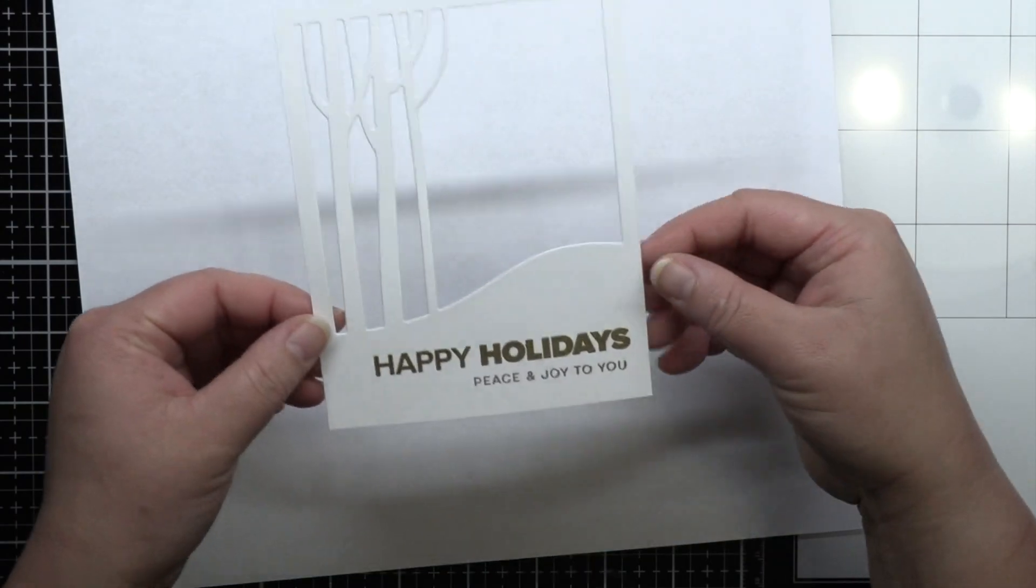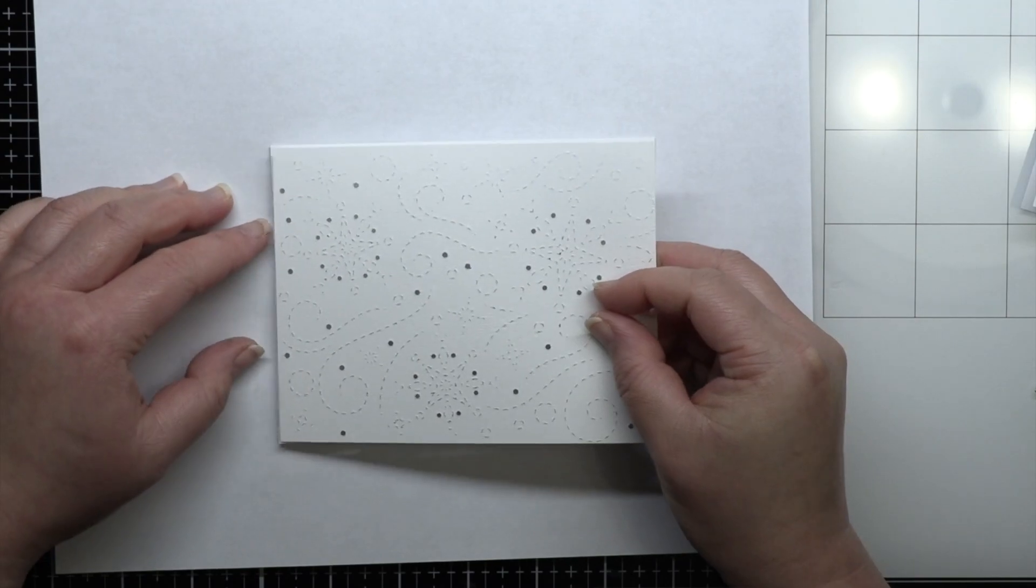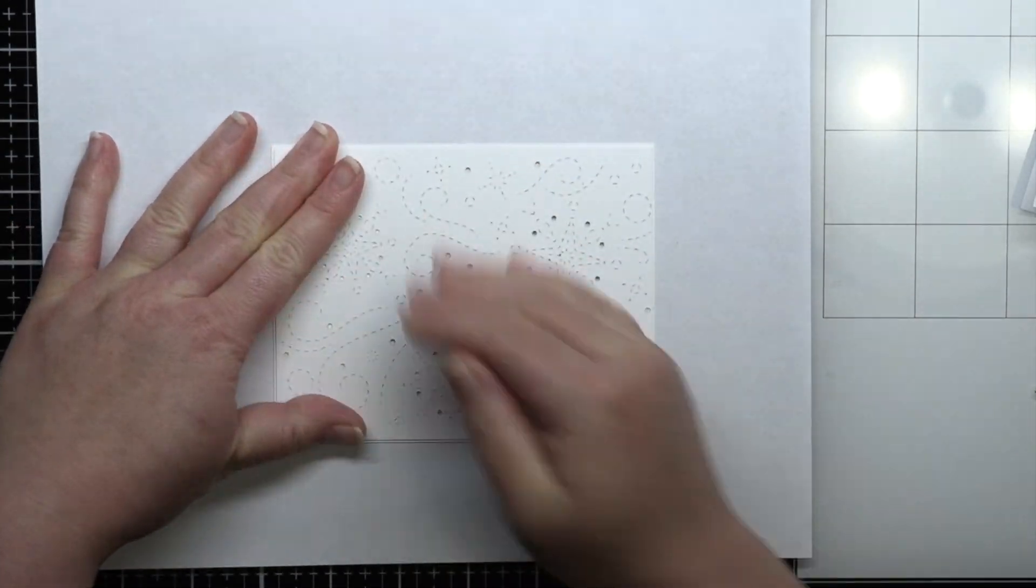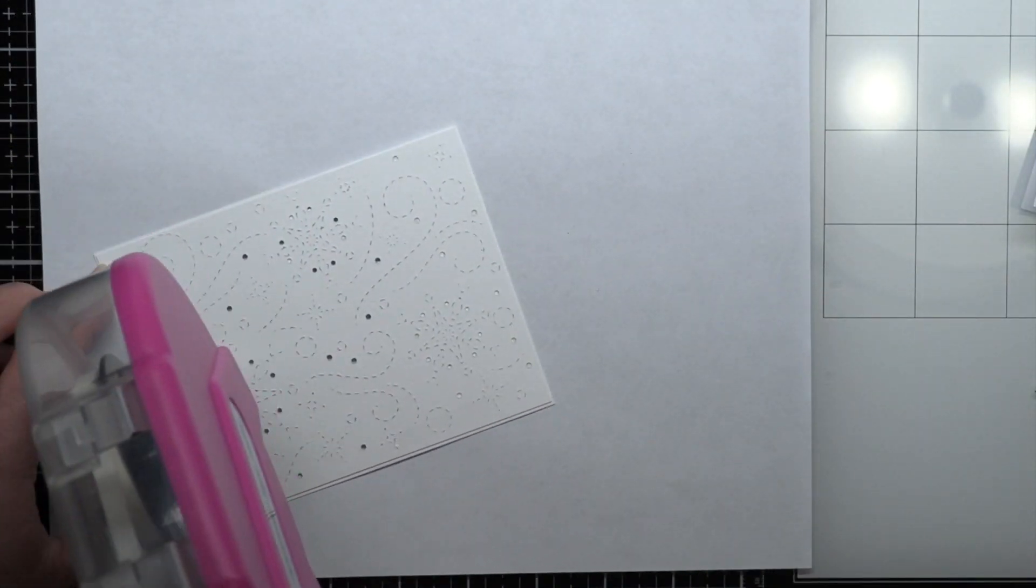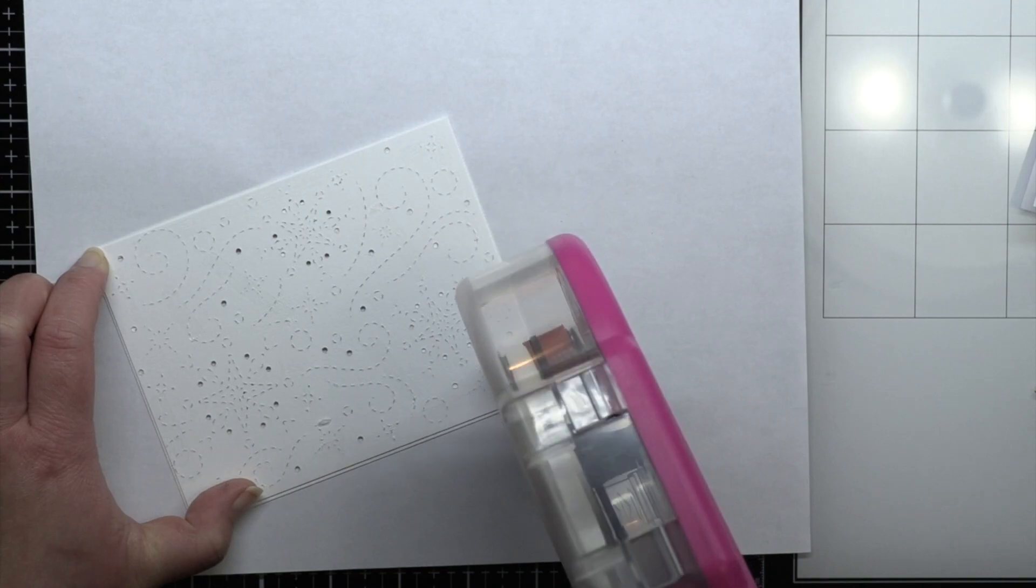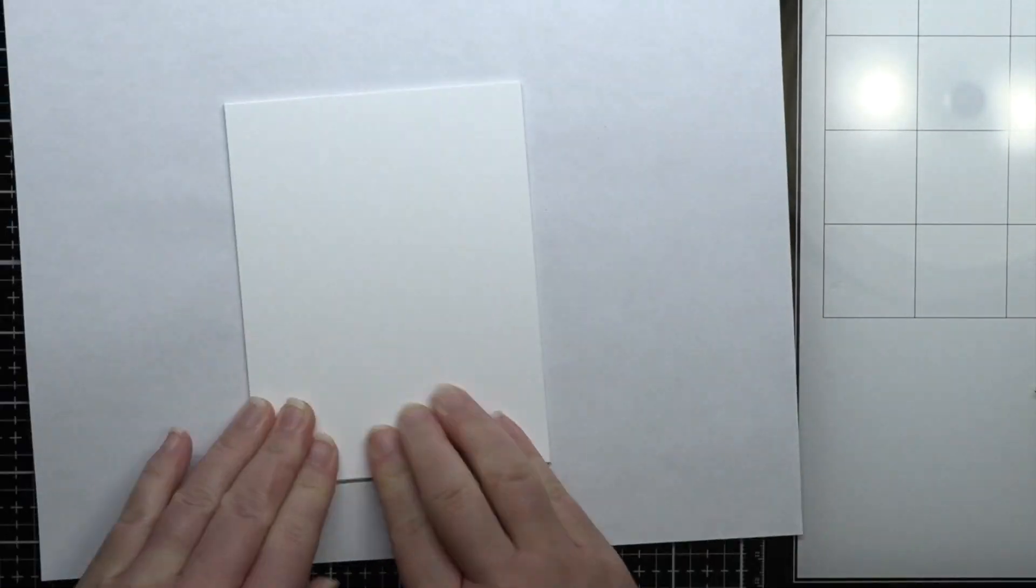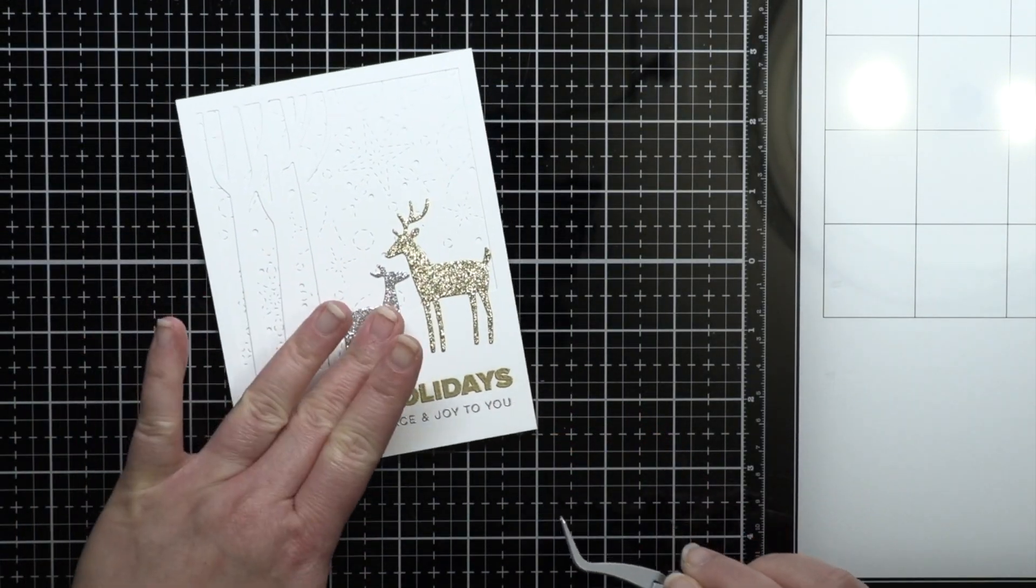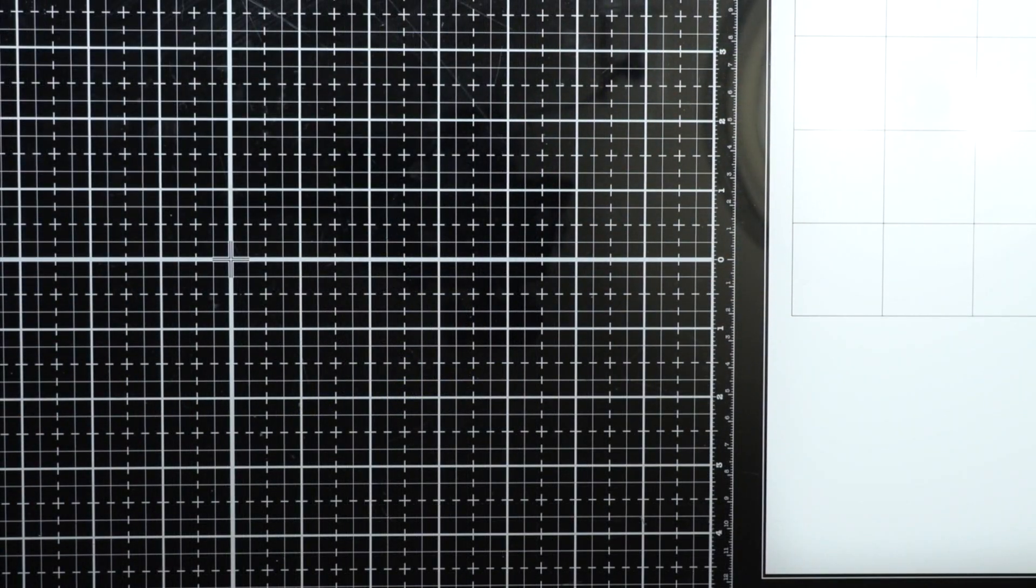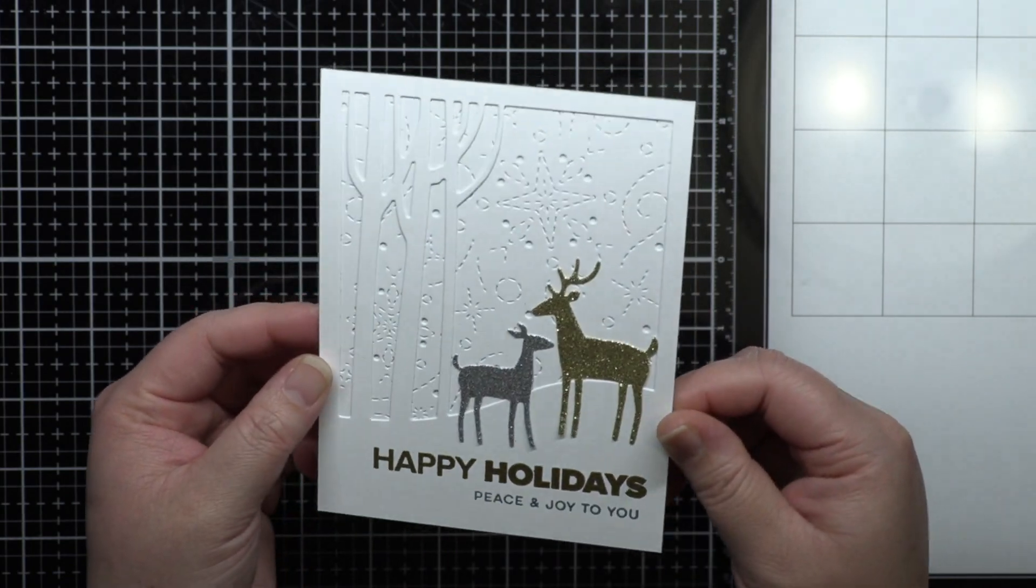Then it was just a matter of adhering it all together. I used score tape and HG adhesive for these cards so that I can easily add adhesive to the thinner areas, but you could also use liquid adhesive to speed things up. I love the little touches of gold and silver in the deer and the sentiment, and also the great detail in the white areas. And that card couldn't be simpler to put together.